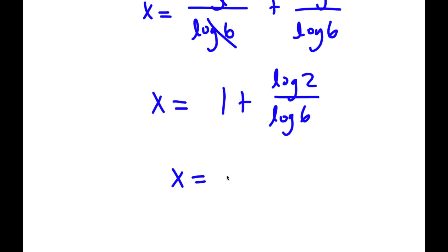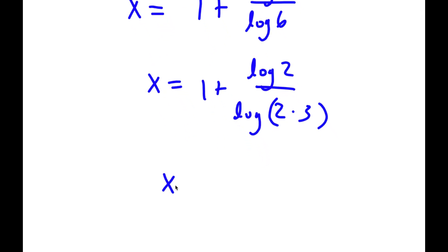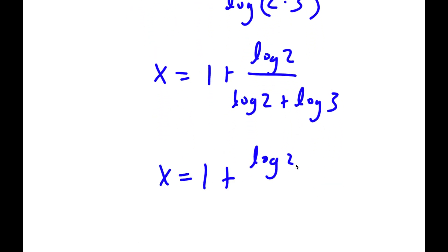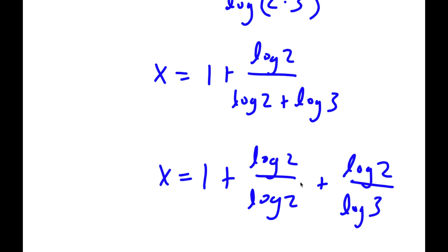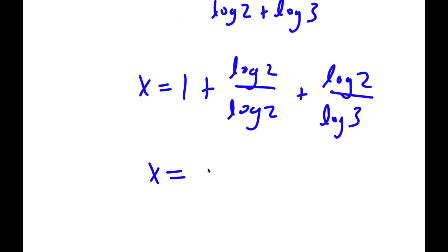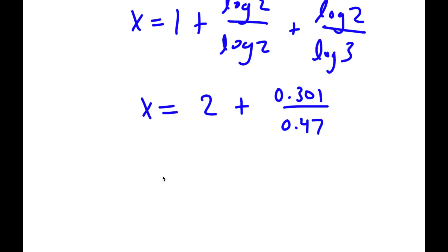And log 6 I can write as log of 2 times 3, and I'll do the same thing again — rewrite as log 2 over log 2 plus log 3. Expanding, I get 1 plus log 2 over log 2, plus log 2 over log 3. Log 2 and log 2 cancel out, so x equals 2 plus log 2 — that's 0.301 — over log 3 — that's 0.477 — and if you simplify this, you get x is equal to approximately 1.3868.